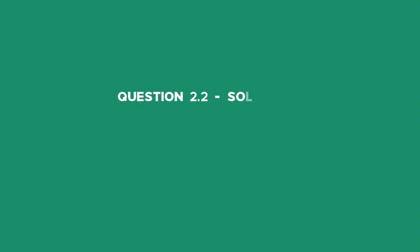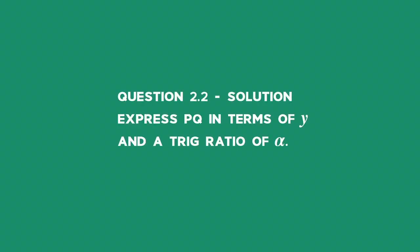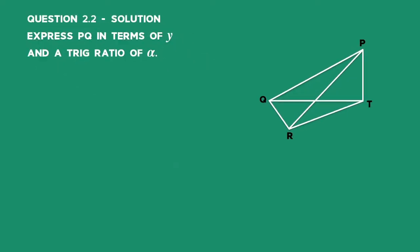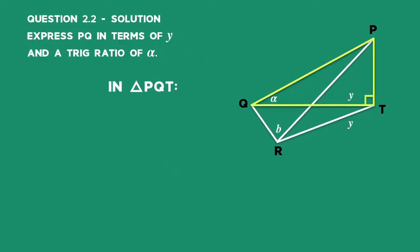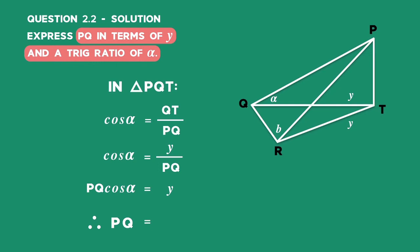For 2.2 to find an expression for PQ using trig ratios, we work in right angle triangle PQT. By definition, cos alpha is adjacent over hypotenuse. Therefore, cos alpha equals QT over PQ. We can replace QT in the equation with Y. Multiply both sides of the equation by PQ and divide by cos alpha. You get PQ in terms of Y and a trig ratio of alpha is Y divided by cos alpha.